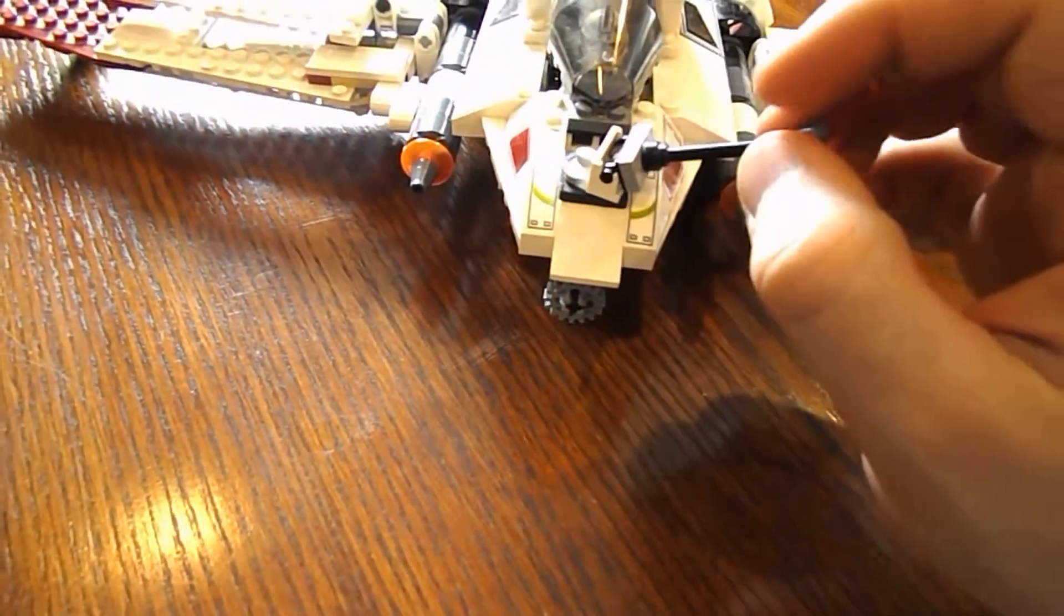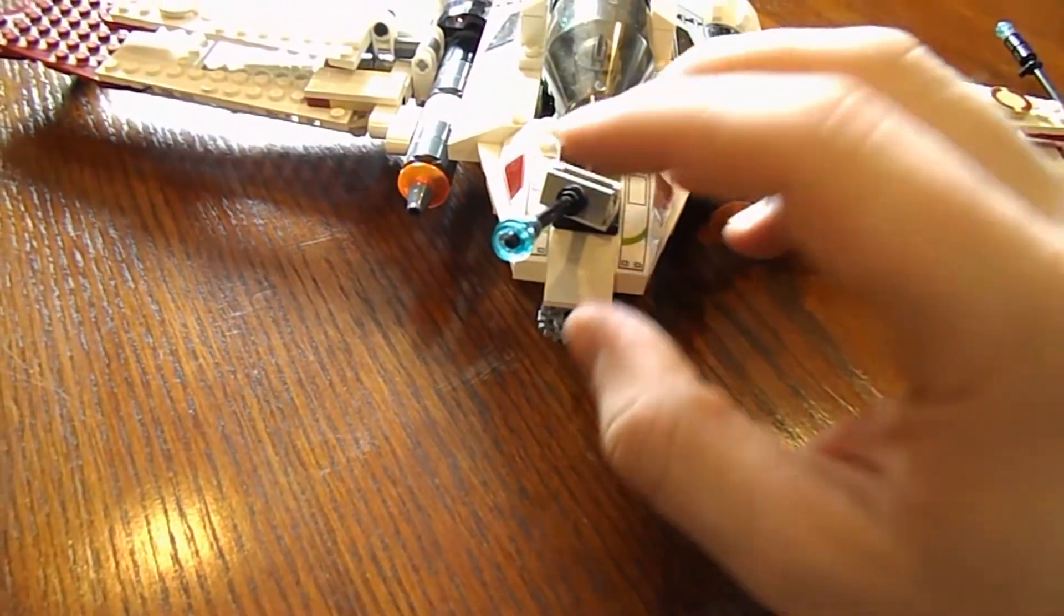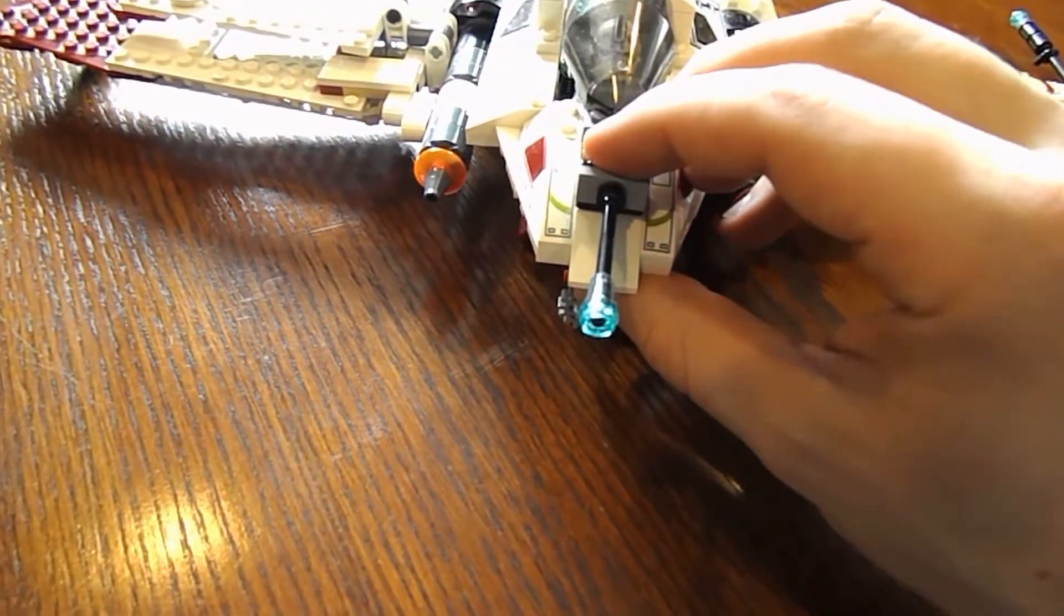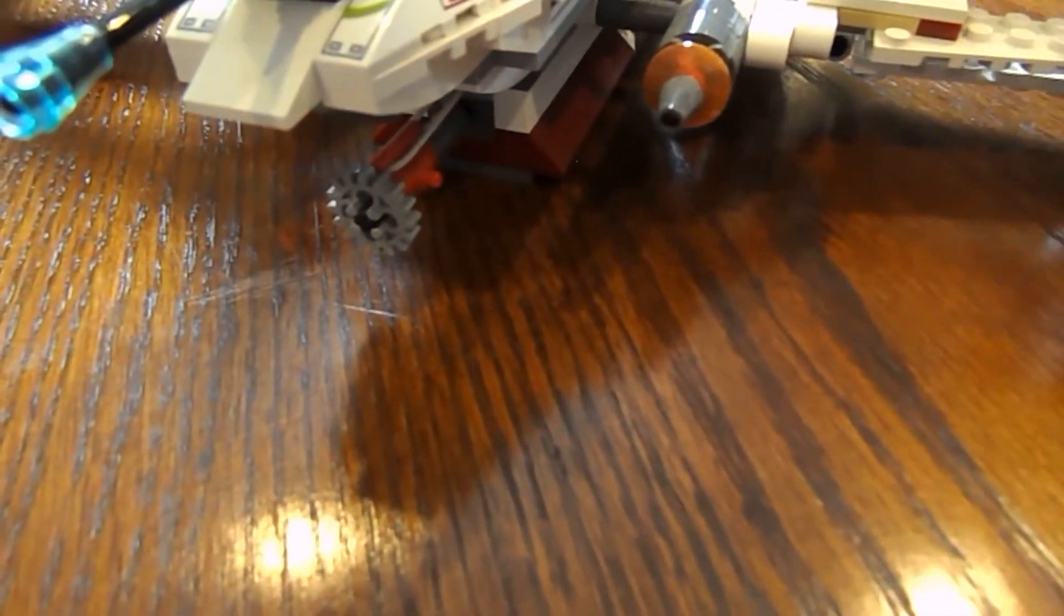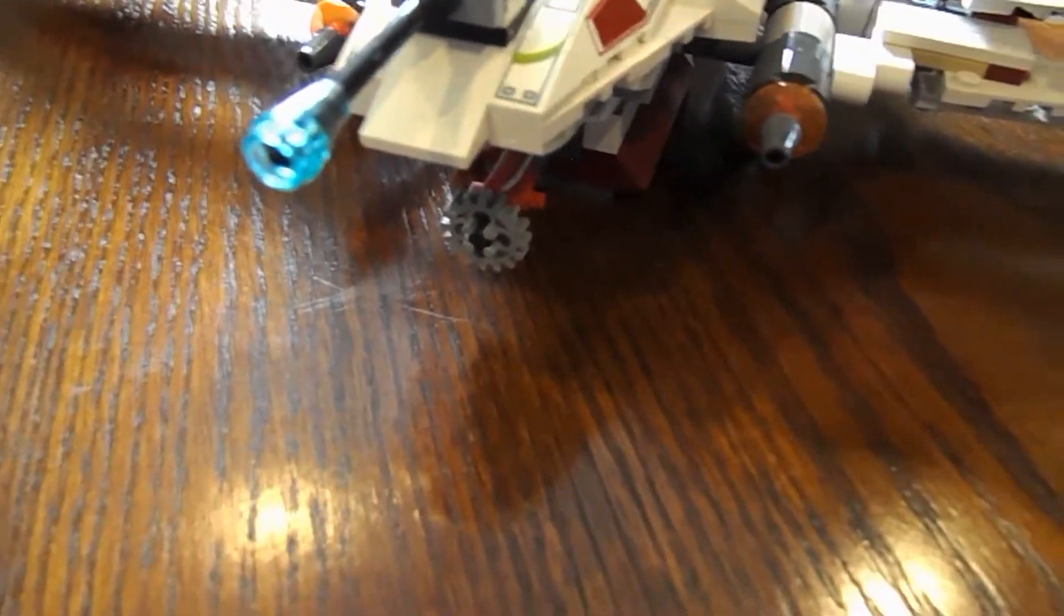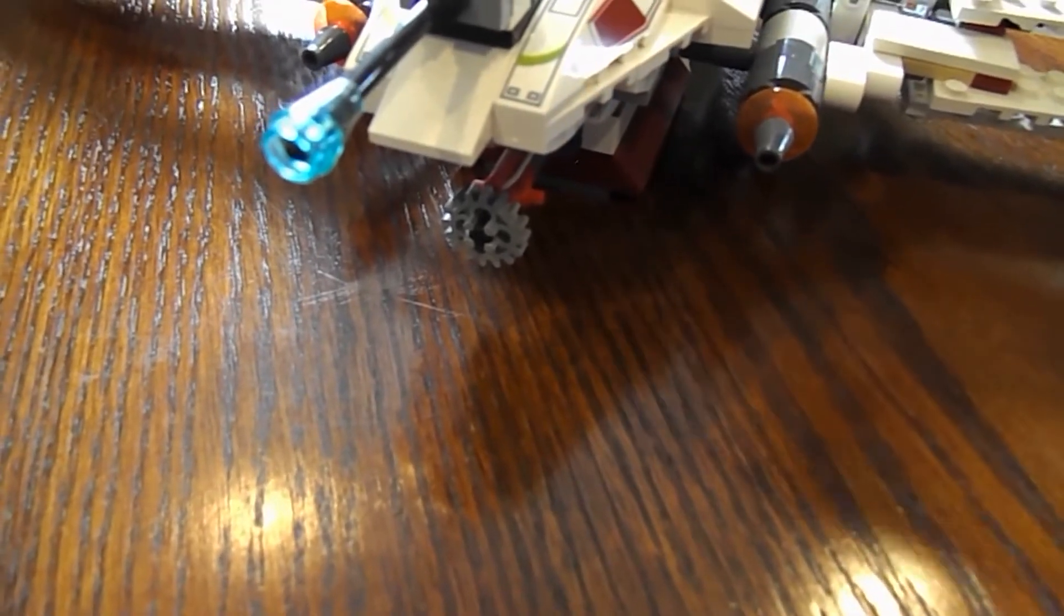Here I have the back laser cannon, of course, and technically the ARC 170 is supposed to have two of them, but when they designed it, they added this, which is supposed to open up the wings. And also if you pull it, little bombs come out as well, which is another feature they changed in the newer one.